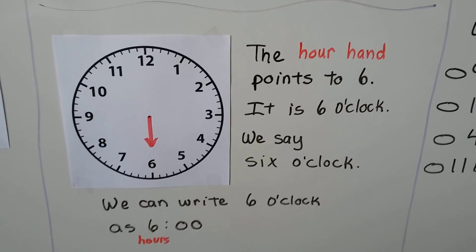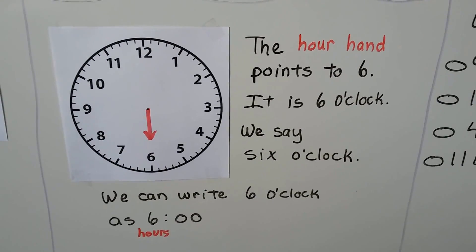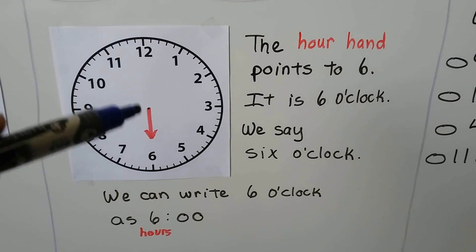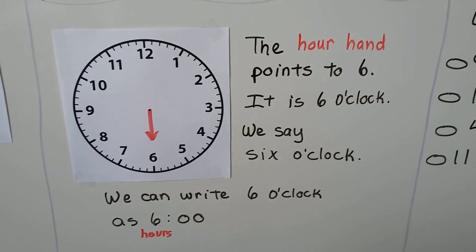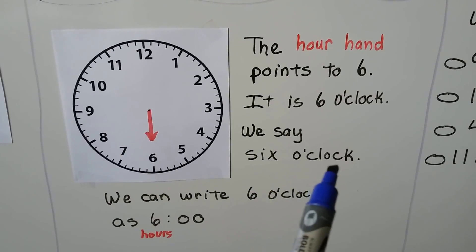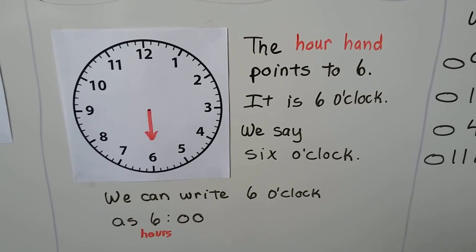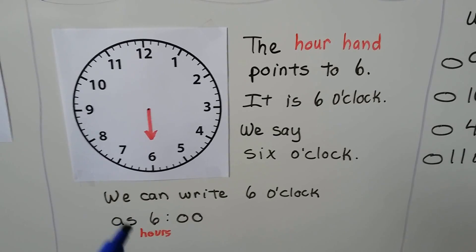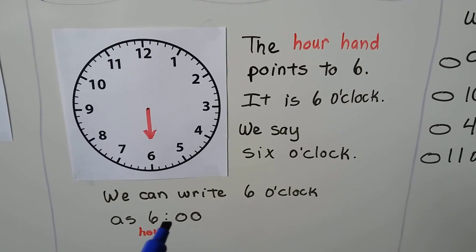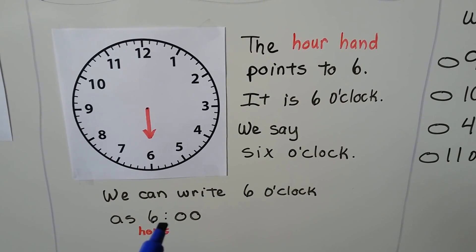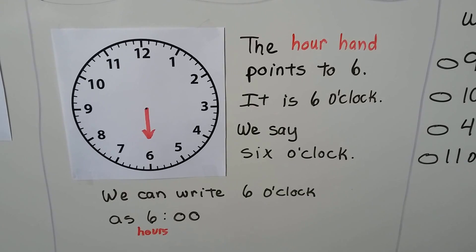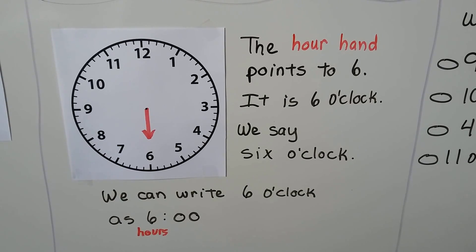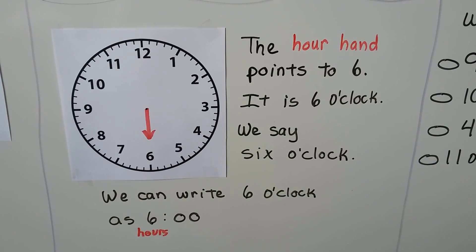The hour hand points to six — it is six o'clock. We can write six o'clock as a six with a colon and zero zero. Six o'clock.